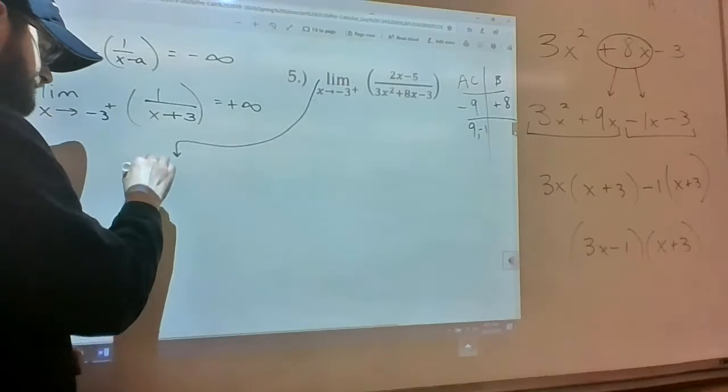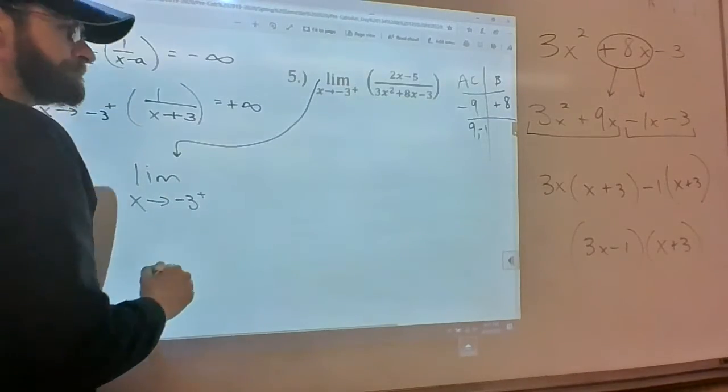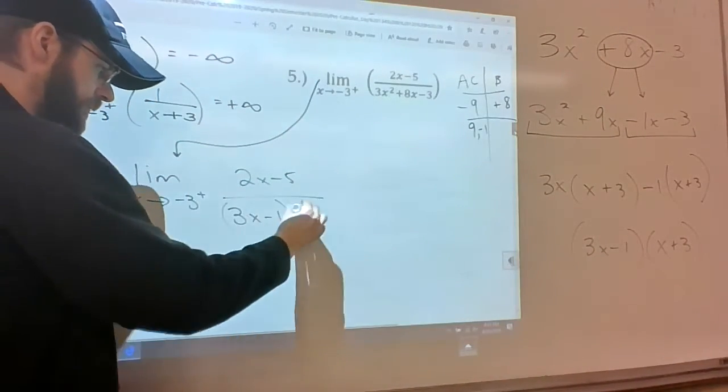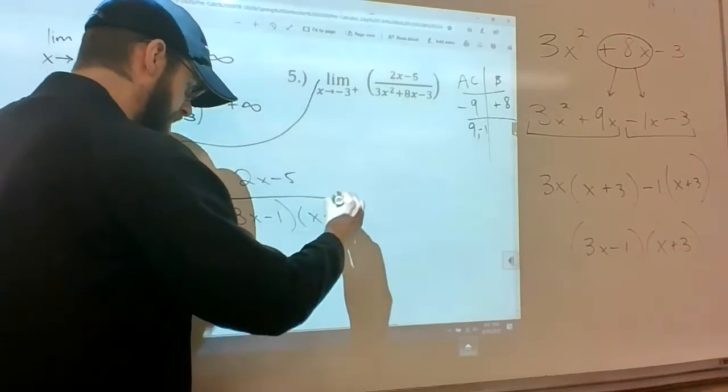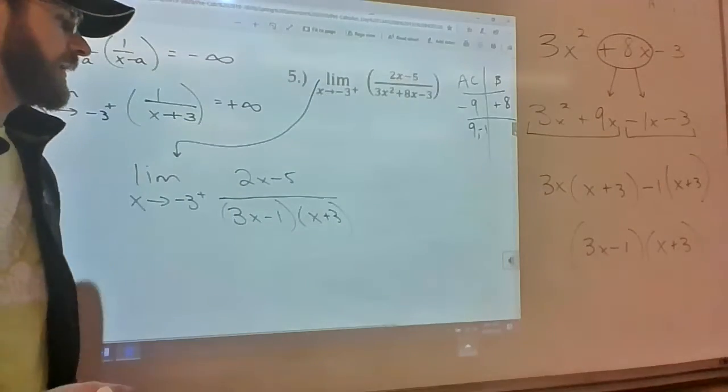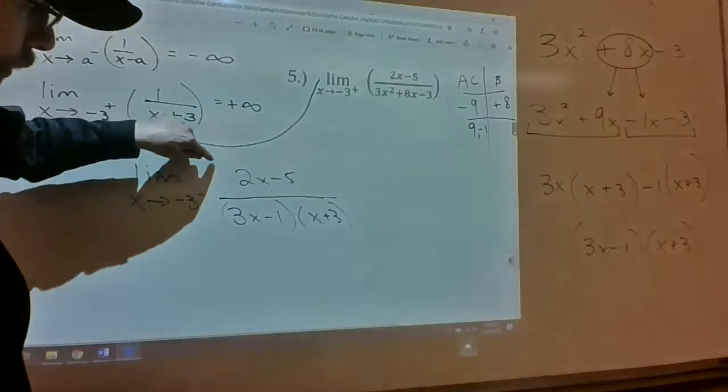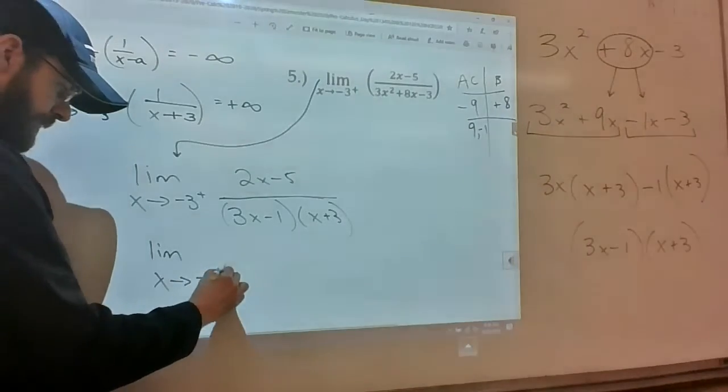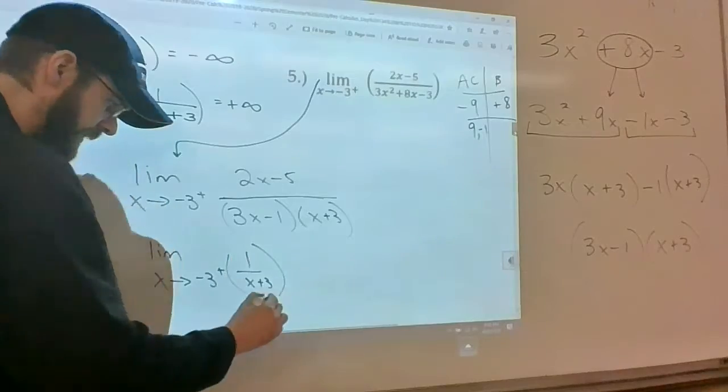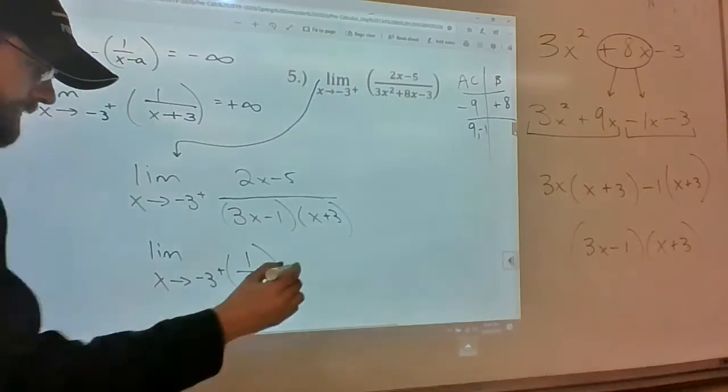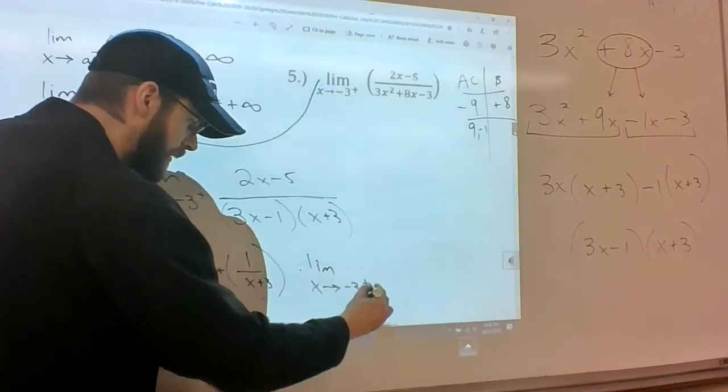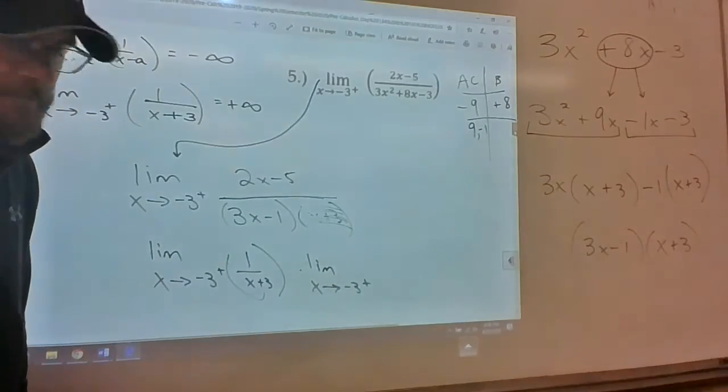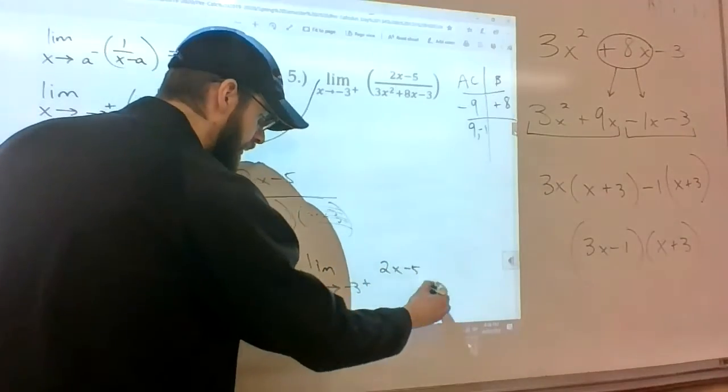I'm going to rewrite this. And now I'm going to extract one over x plus three and multiply that by the remaining part of that function. Both taken to that limit, of course.